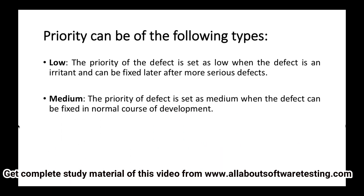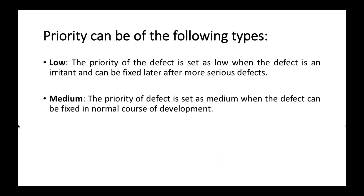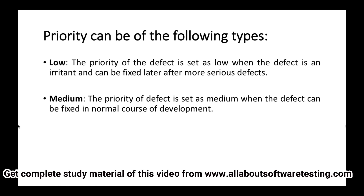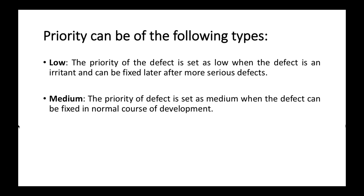The next type is medium priority. The priority of a defect is set as medium when the defect can be fixed in the normal course of development. It is not urgent — it doesn't need to be fixed right now. When all defects are reported and the dev team works through them, this type of defect will be taken care of.